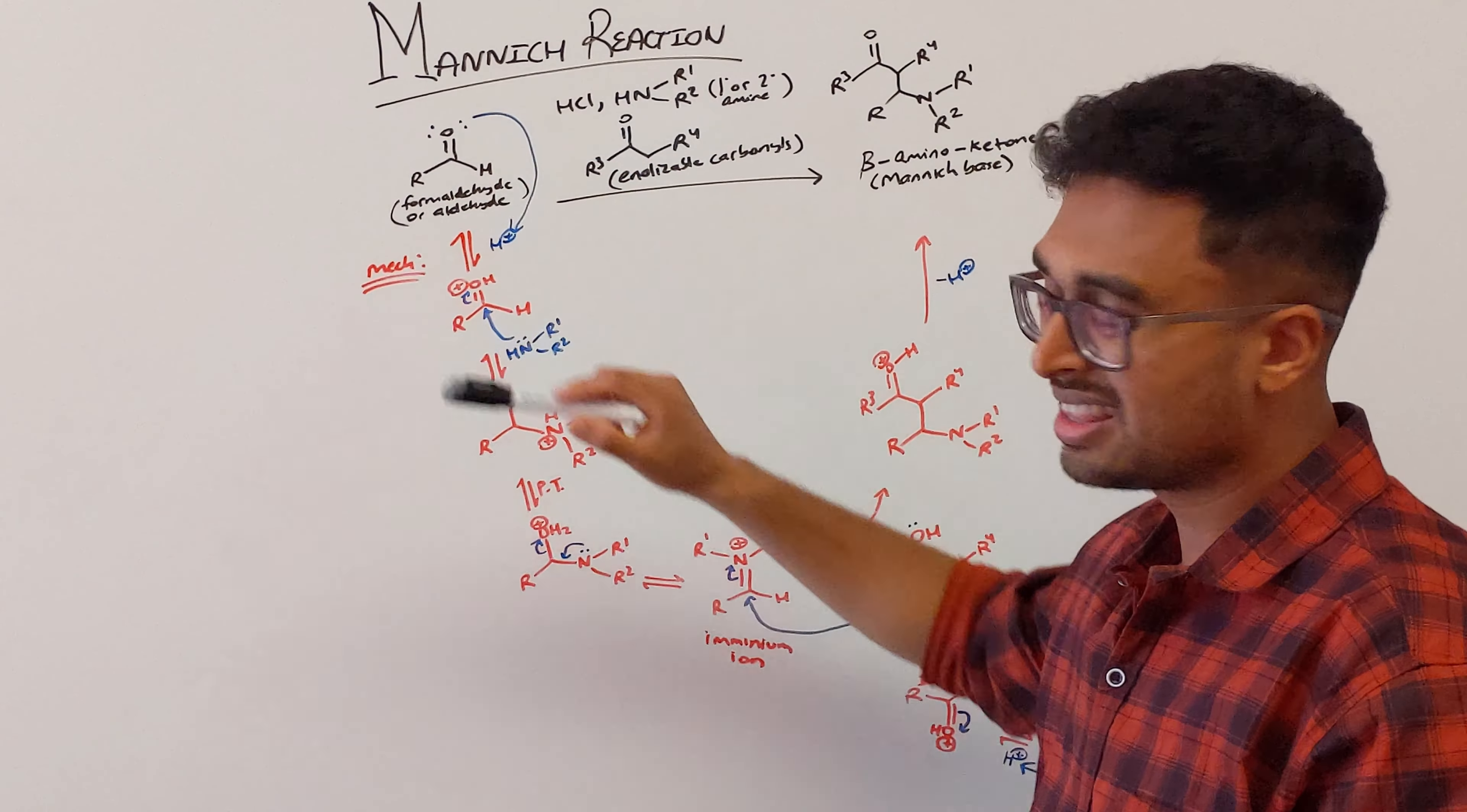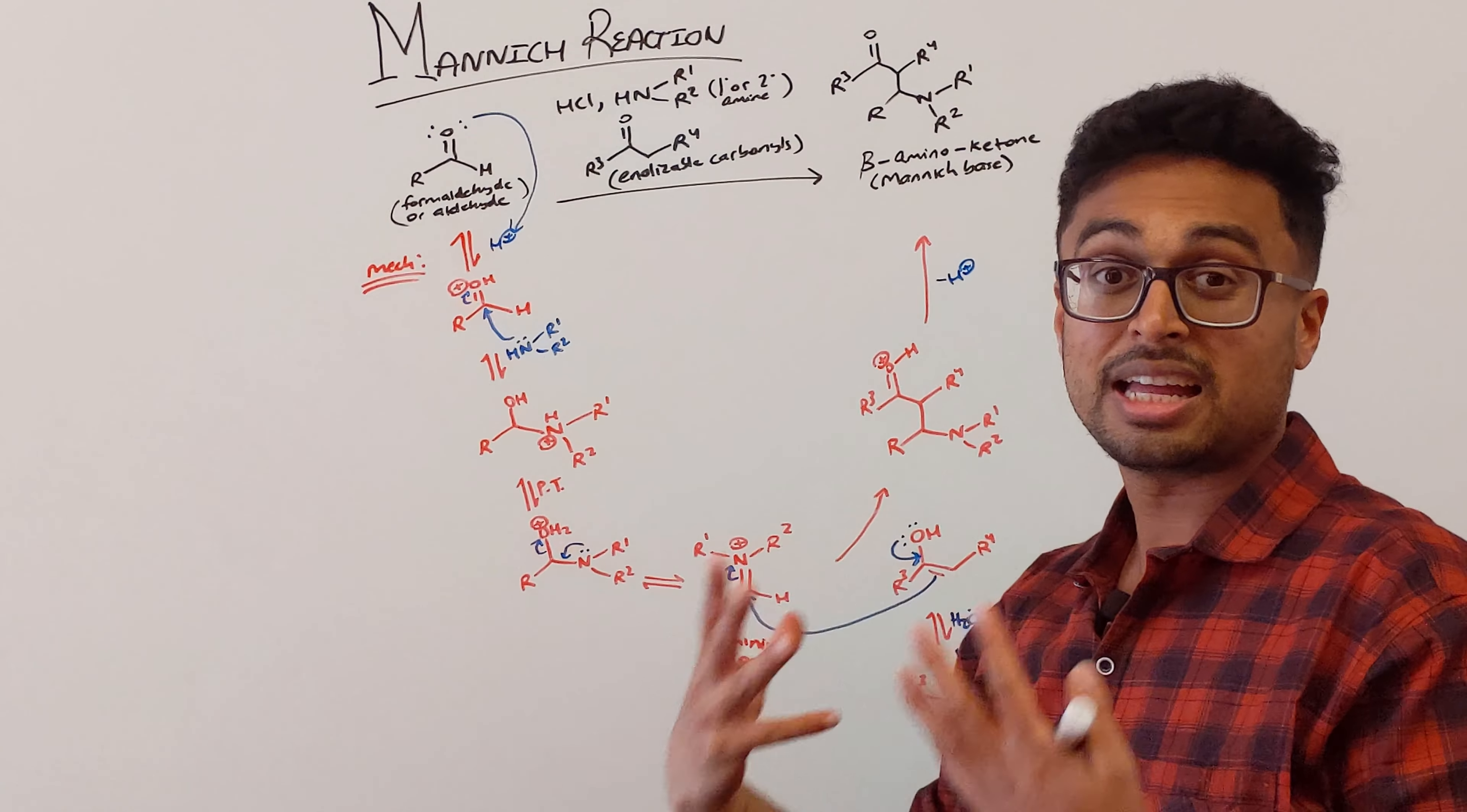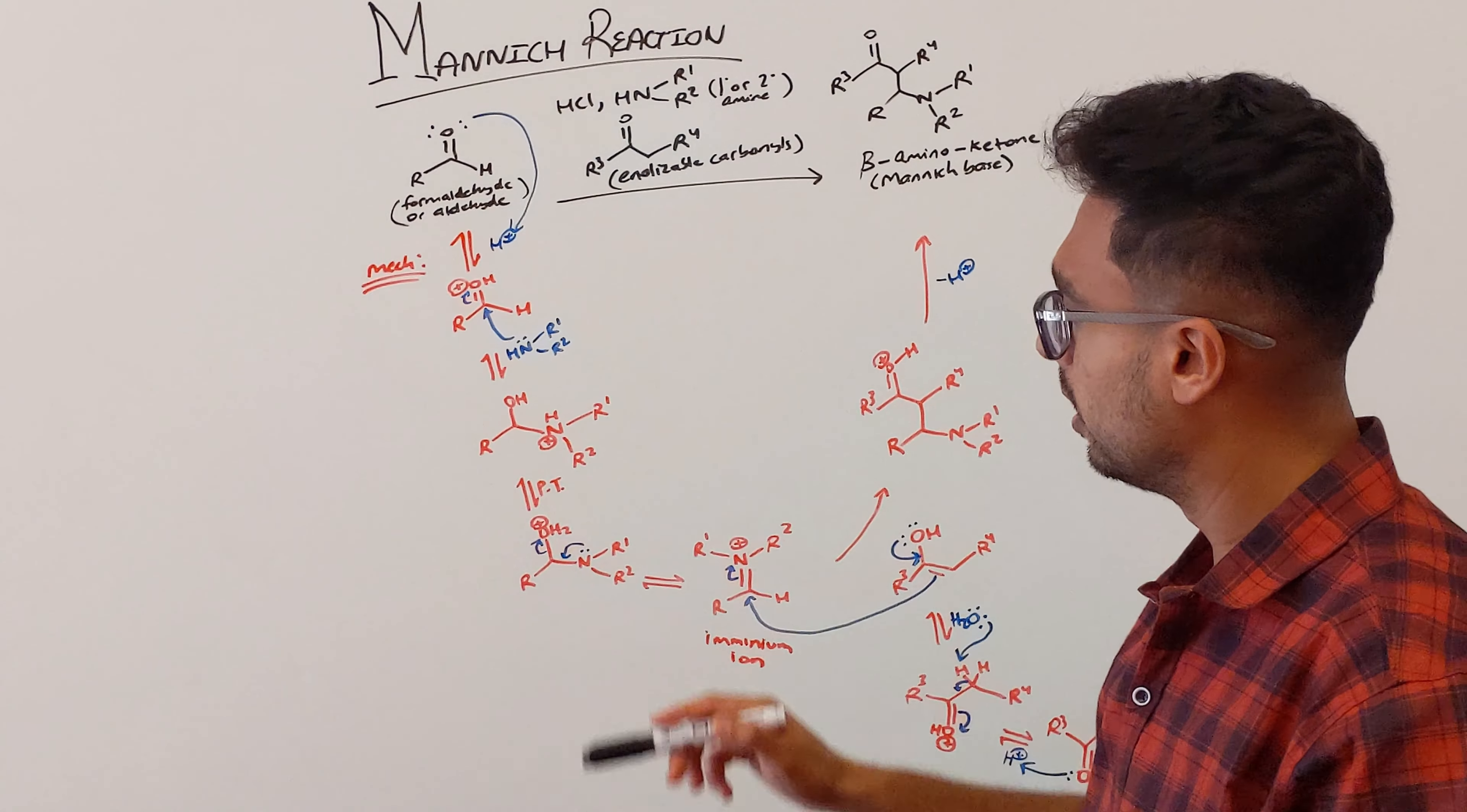Now let's understand the mechanism. Here we have an aldehyde. When we have acidic medium, this oxygen is going to be protonated because it has that electron density. So it's going to extract that proton and now you're going to generate a protonated carbonyl. Now this is a good electrophile.